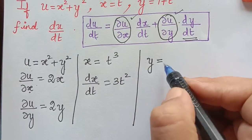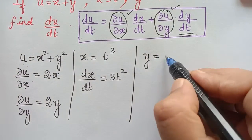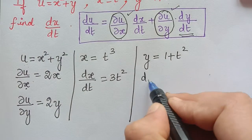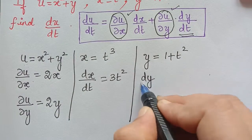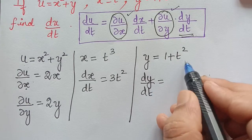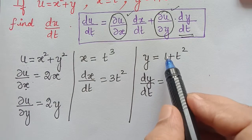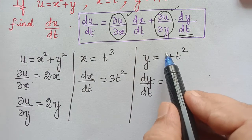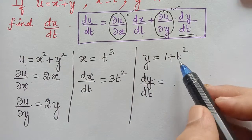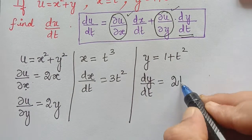Now we find dy/dt. y is given as 1 plus t squared. Differentiating with respect to t: the derivative of the constant 1 is 0, and the derivative of t squared is 2t. So dy/dt equals 2t.